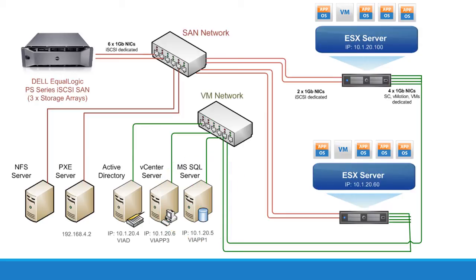Right here we've got the shared instance of vCenter Server, called vApp3, with an IP address of 10.1.20.6 and FQDN vapp3.lab.vadmin.com. You can use this shared, pre-installed instance of vCenter Server to practice advanced VMware features such as vMotion, high availability, fault tolerance, DRS, etc. This is also where you can find Windows and Linux virtual machine templates to quickly provision new virtual machines.